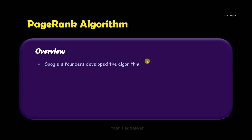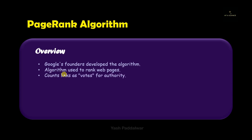This algorithm is developed by Google and is basically used to rank the web pages present over the internet. Ranking means relevance or importance, so the most relevant and important pages for a particular query fired by any user can be easily retrieved. This algorithm takes into account the links present between different nodes in the entire network as votes for the authorities.